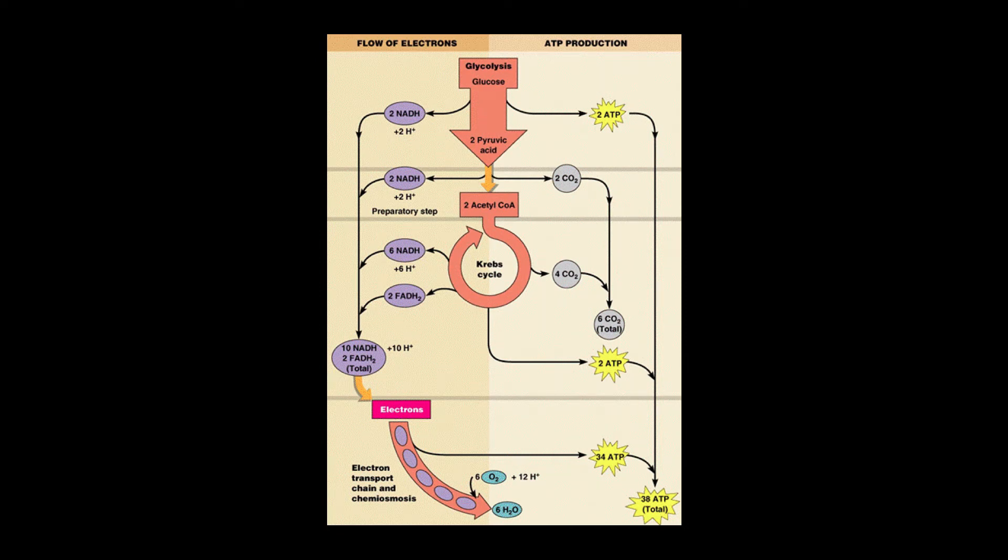This video teaches about the electron transport chain. The electron transport chain is located on the cell membrane in prokaryotes and on the inner mitochondrial membrane in eukaryotes.